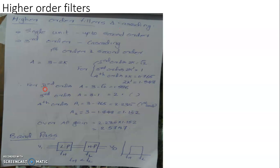Let's consider a brief note on higher order filters. Higher order filters having Butterworth response, or any response category, can be constructed either by increasing the number of passive filtering units associated with the active components, or in a more convenient manner by the cascading of lower order filters.